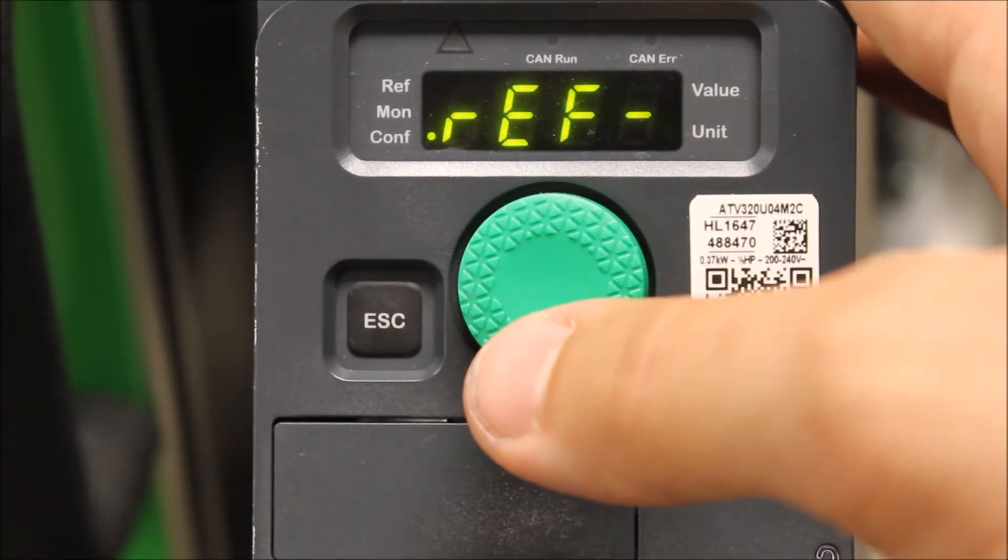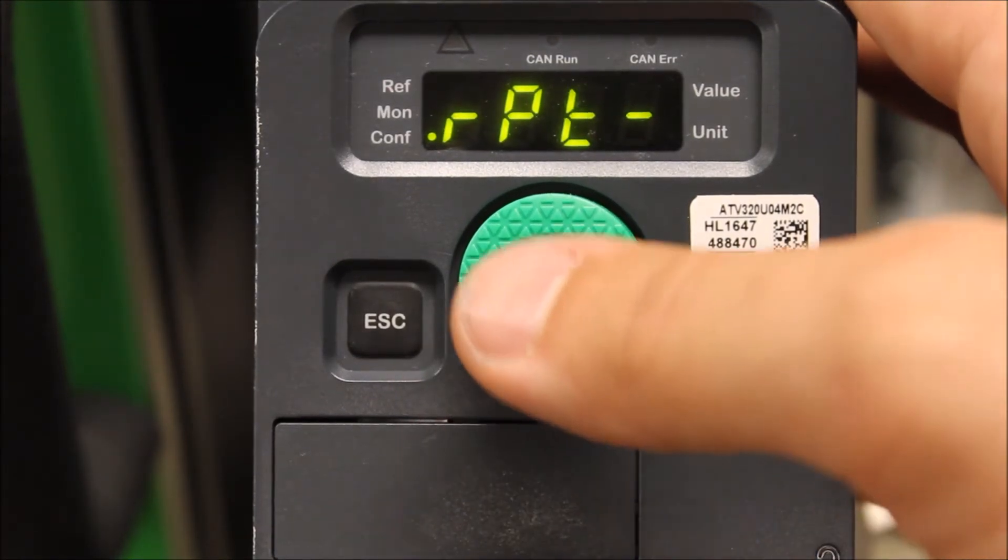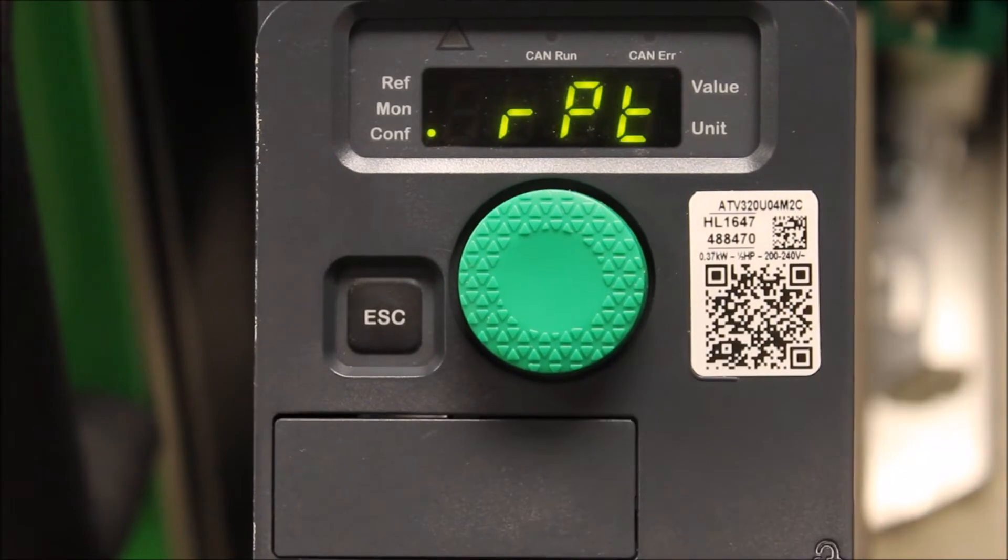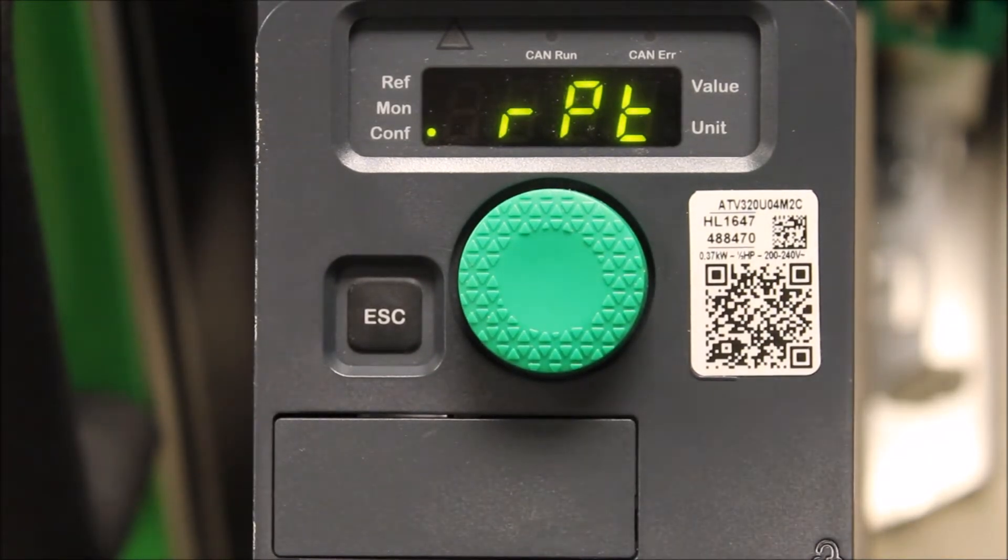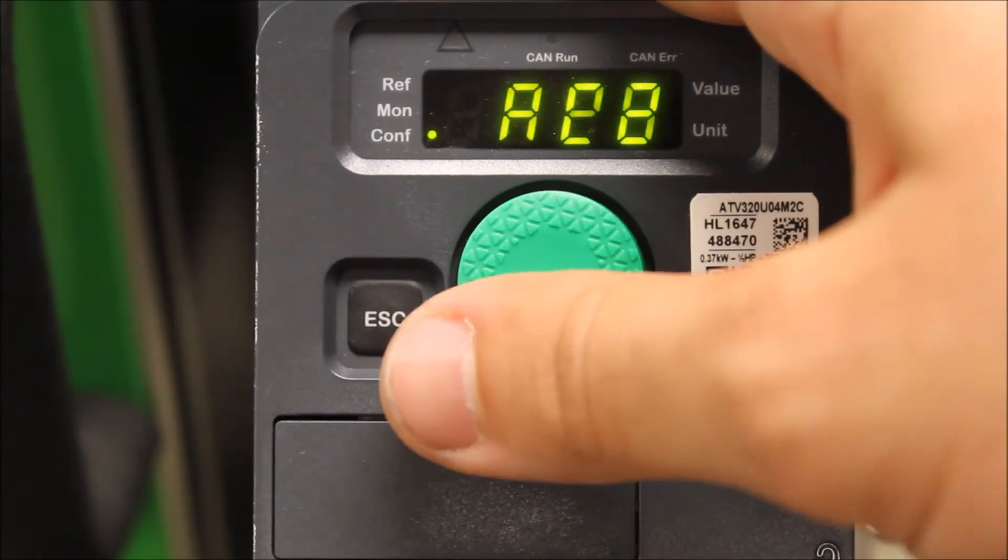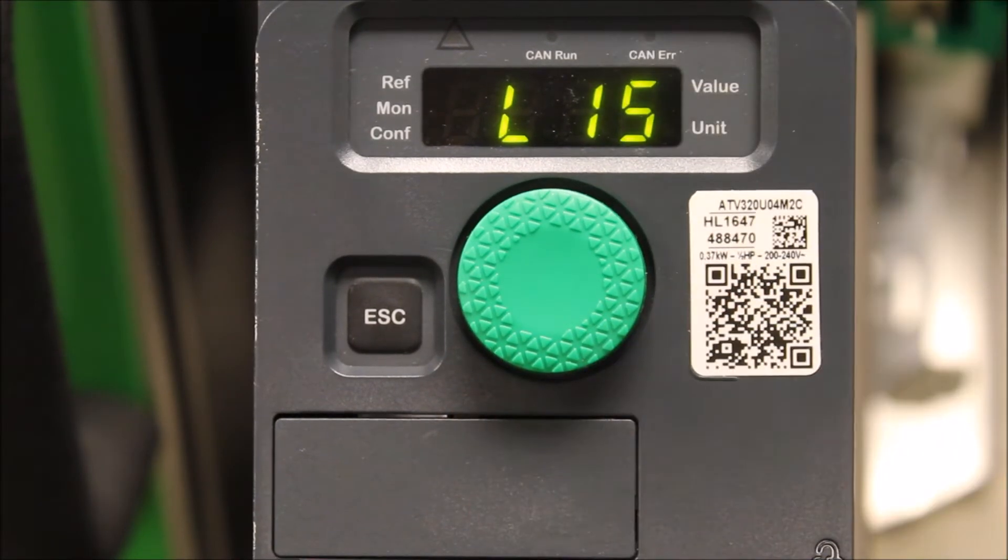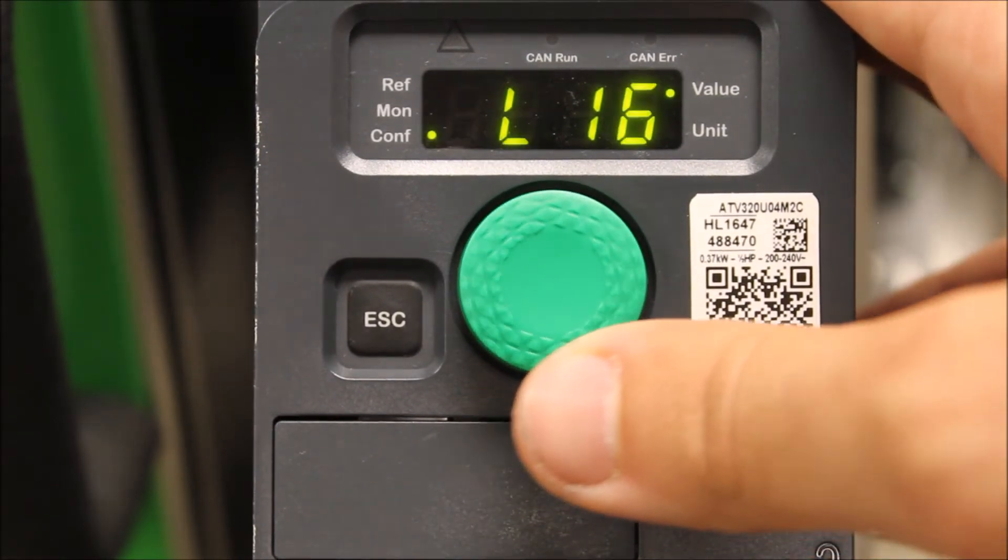and then you want to go down to RPT. The first parameter you want to look for here is RPS. RPS is basically where you toggle the ramp switching using a logic input. As you can see here, you can program from logic